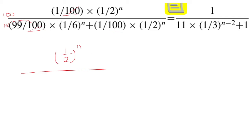So if I multiply to the first one, that 100 is going to cancel and I have 99 × (1/6)^n. And if I multiply to the second one, this 100 cancels and I'm left with (1/2)^n.